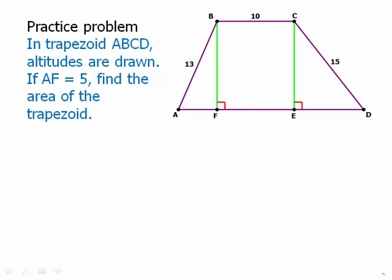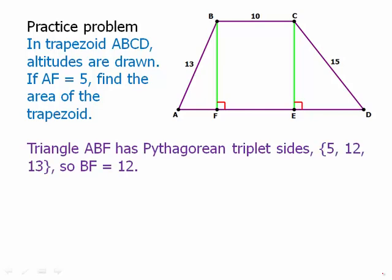Well, first of all, we're going to look at triangle ABF. That little triangle, we have a leg of 5, an unknown leg, and a hypotenuse of 13. So of course, that's a 5, 12, 13 triangle. And BF equals 12. So we can find that just from knowledge of our Pythagorean triplet. We don't even need to do a calculation. So BF equals 12.